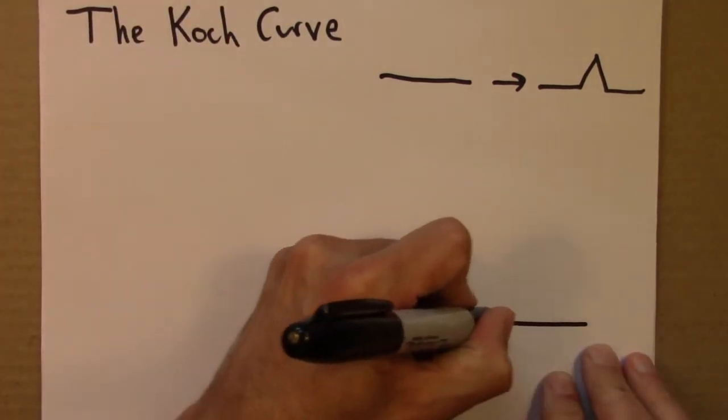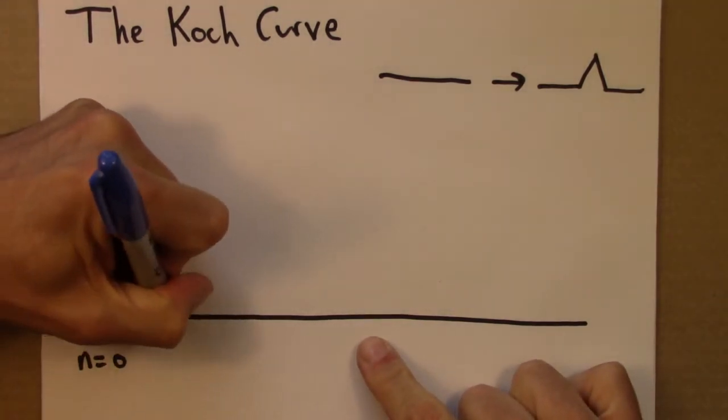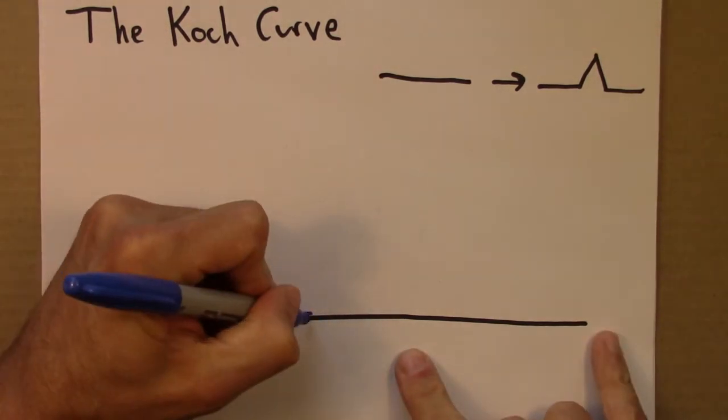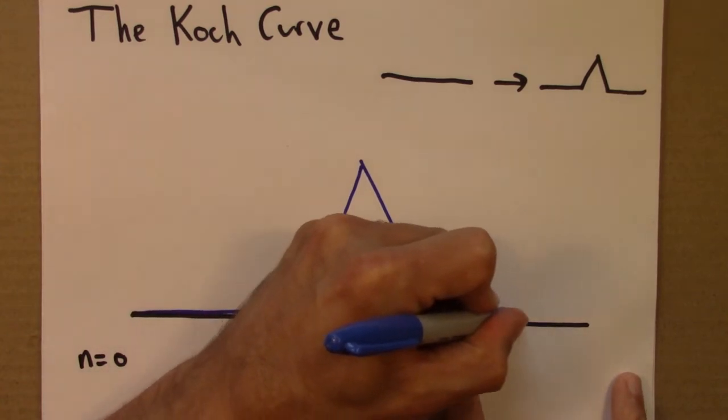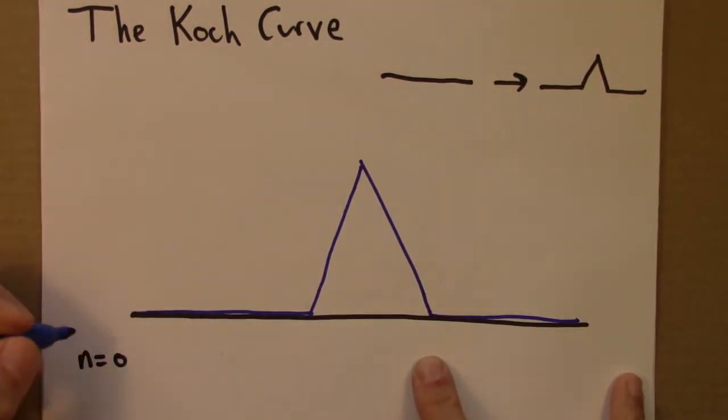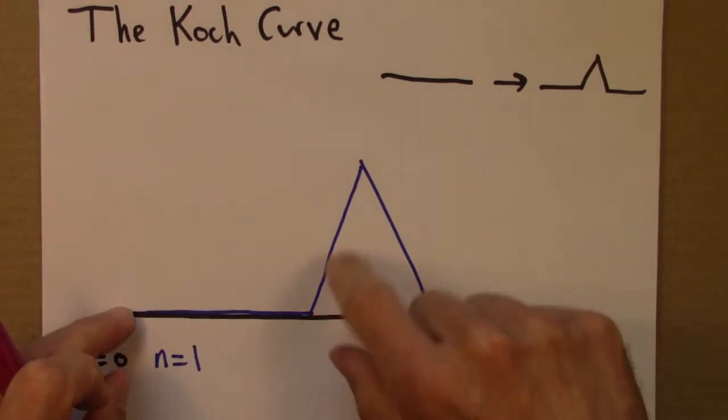So we might start with a line segment like this. So n equals zero, that would be in black. And then the next step would be to replace this line segment with a bent line segment. So the blue curve, that's n equals one.